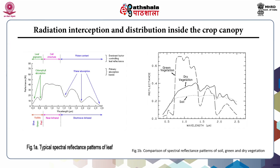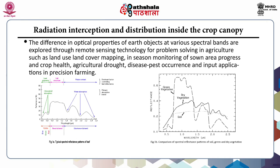In the figures shown, the top figure displays a typical spectral reflectance pattern of a leaf, showing leaf pigments, cell structure, and water content, with chlorophyll absorption at blue, green, and red wavelengths and water absorption in the infrared region. The second figure shows the comparison of spectral reflectance patterns of soil, green vegetation, and dry vegetation. The differences in optical properties of earth objects at various spectral bands are explored through remote sensing technology for problem-solving in agriculture, such as land use and land cover mapping, in-season crop monitoring, agricultural drought, disease and pest occurrence, and input applications in precision farming.